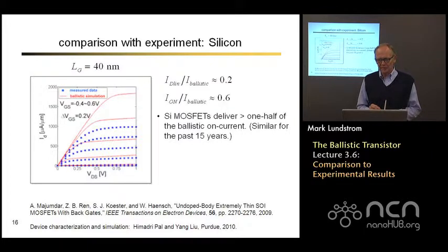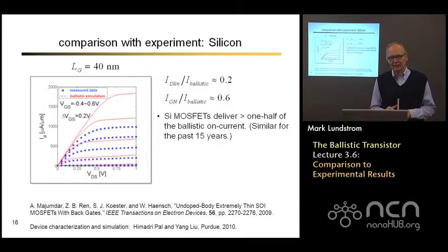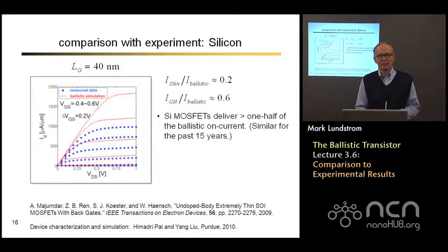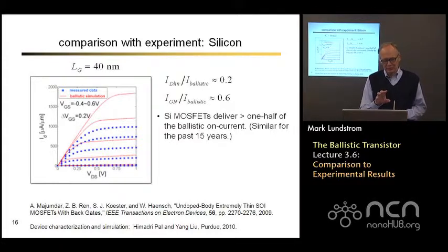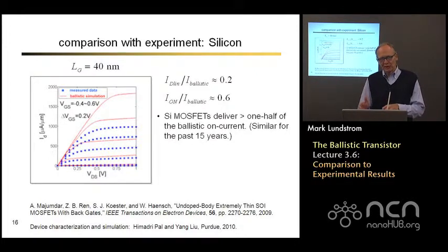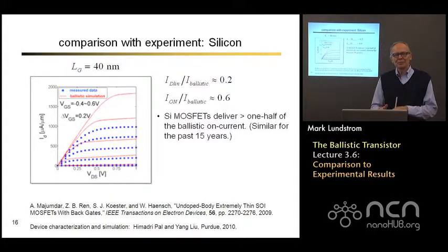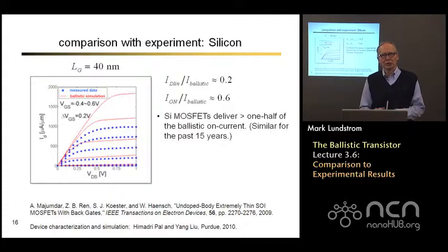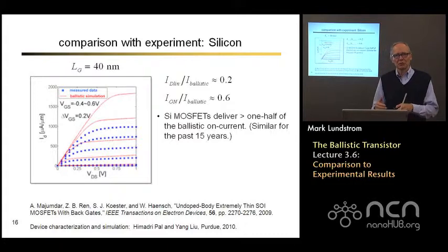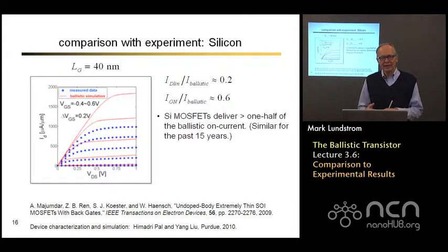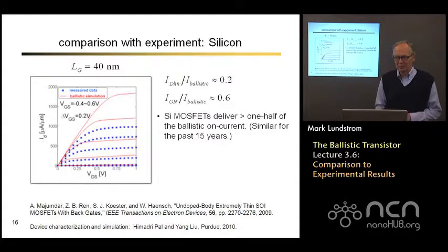Interestingly, this has been similar for about 15 years. Even on 250 nanometer channel length devices analyzed years ago, devices were delivering about half the ballistic on-current. Now at 40 nanometer channel lengths we're still at roughly half, just a little bit higher. Why is it stuck at about half? A lot of that has to do with the need for electrostatically well-designed, well-tempered MOSFETs. Reducing channel length would allow operation closer to the ballistic limit, but you also thin the oxide — introducing more surface roughness scattering — and raise channel doping, increasing scattering. The things you do to achieve good electrostatic control end up introducing more scattering, and you wind up back at about half the ballistic limit.